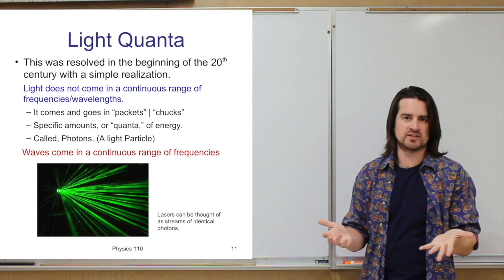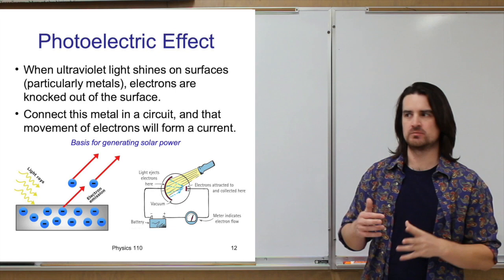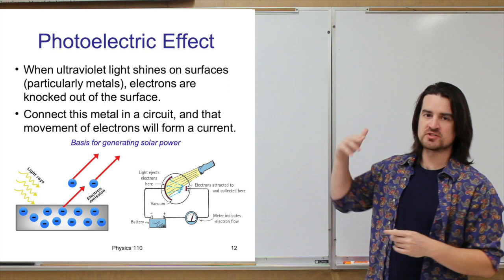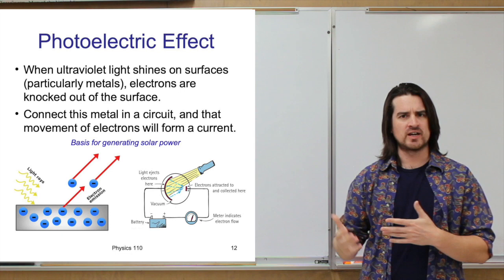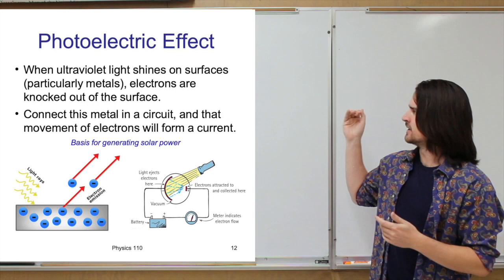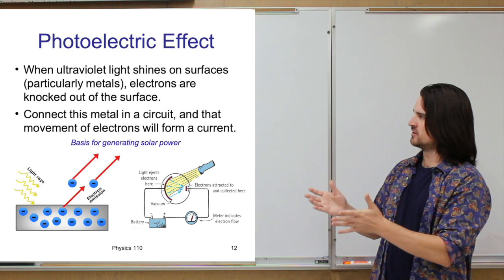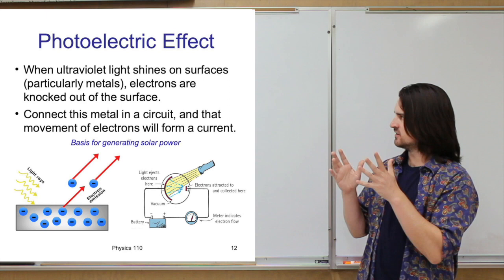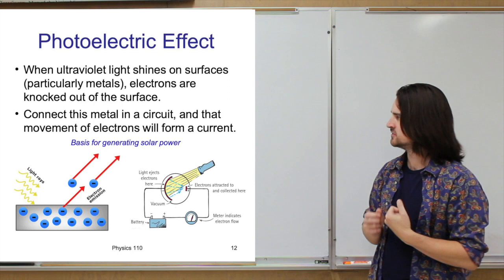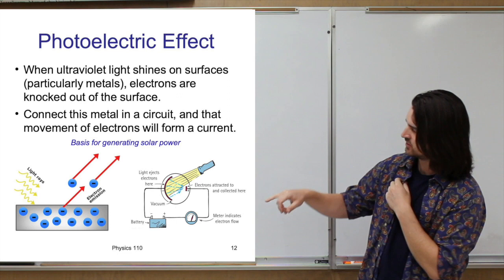Another thing being looked at around that same time was called the photoelectric effect. This phenomenon had been known about for a while beforehand but never really understood or had a good explanation. Essentially, the phenomenon was: if you take ultraviolet light and shine it on some surface — mostly metals will do this — it turns out that you can knock electrons off of that surface. As shown in the picture here, you see light rays coming in, hitting the surface, and you get electrons being emitted out, being kicked off the surface.